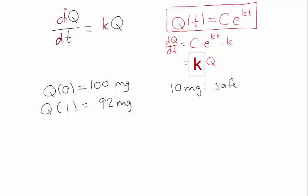Now remember C, if I plug in 0 to Q(t), I get Q(0) is C times 1, which is C. So remember that C is our initial quantity. C is always going to be Q(0).